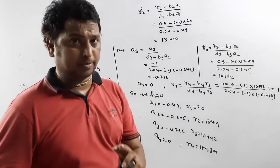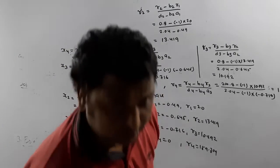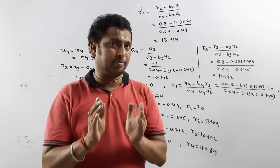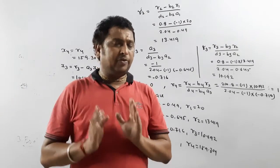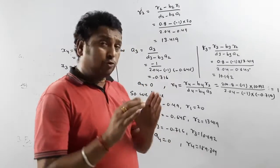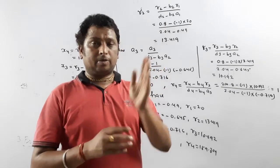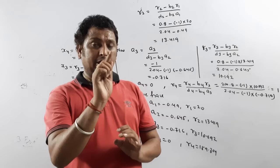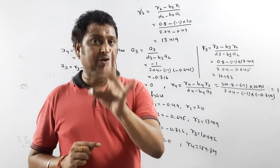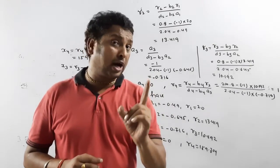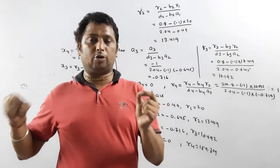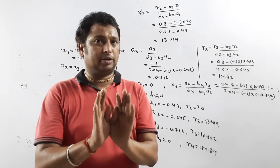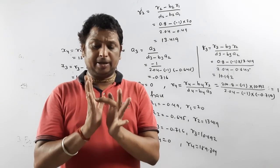This is the complete procedure for the Thomas algorithm. To revise briefly: whenever a system is given in tri-diagonal form — which it always will be when they ask you to solve by Thomas algorithm — denote the main diagonal by D, upper diagonal by A, and lower diagonal by B. Remember: the upper diagonal starts A1, A2, A3, and the last value is always 0. For the lower diagonal, the starting value B1 is always 0, then B2, B3, B4. Write the R values (right-hand side). Once done, step 1 is complete.